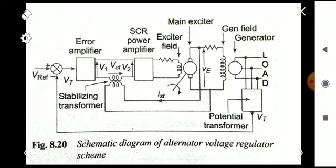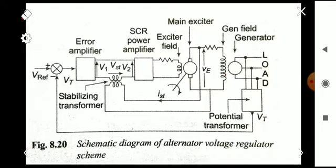The next component is the error amplifier, followed by the SCR power amplifier. The SCR power amplifier and exciter field are considered as a single component. Next we have the alternator, and finally a stabilizing transformer. We will discuss each of these and generate their transfer functions.